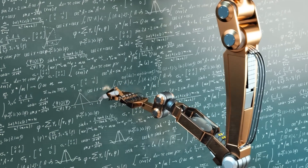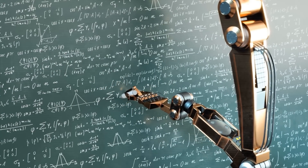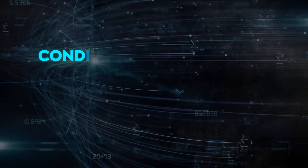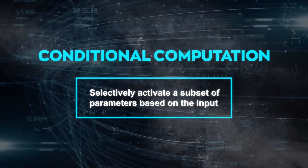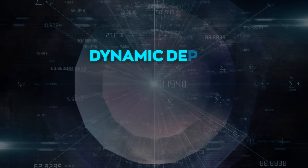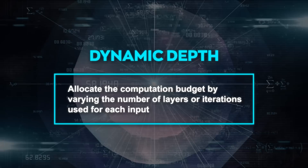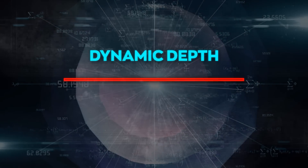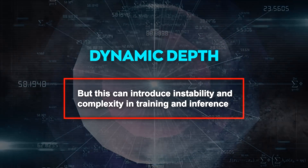But there's a catch. Existing adaptive models have some limitations and drawbacks that prevent them from achieving their full potential. For example, some adaptive models use conditional computation to selectively activate a subset of parameters based on the input, but this can be inefficient and hard to implement. Other adaptive models use dynamic depth to allocate the computation budget by varying the number of layers or iterations used for each input, but this can introduce stability and complexity in training and inference.